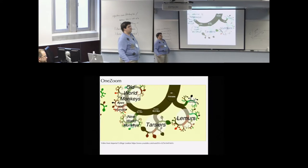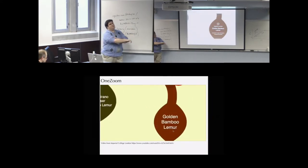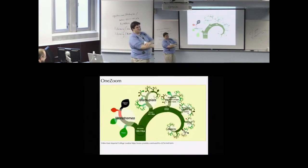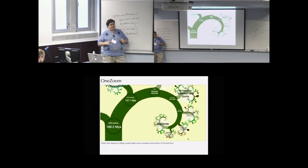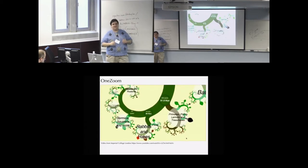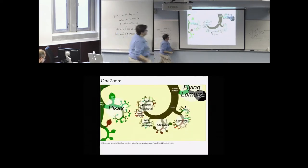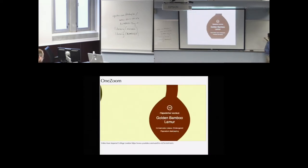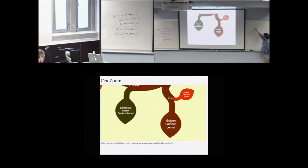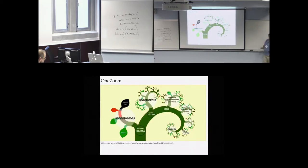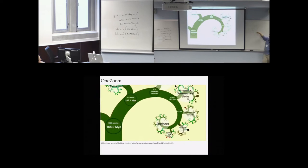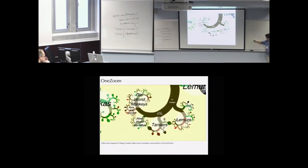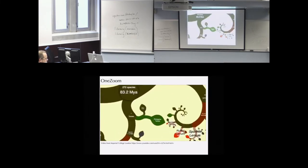What does the tree data actually look like? There are multiple data formats. The most basic is Newick, named after Newick Seafood Restaurant in New Hampshire where there was an evolution meeting and a few people building phylogenetic software agreed on a standard. A Newick tree is a series of nestings — so for bonobo, chimp, human, gorilla: bonobo and chimp form a clade, then with human, then with gorilla. It's a series of parenthetical nestings.